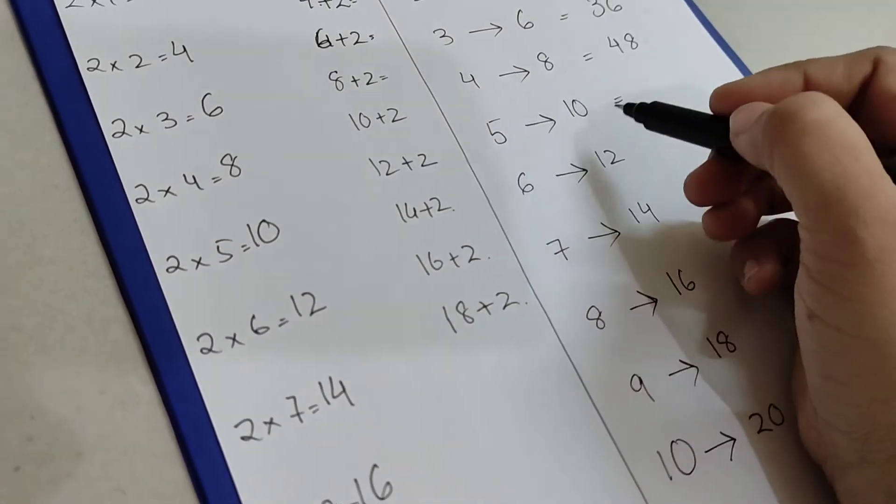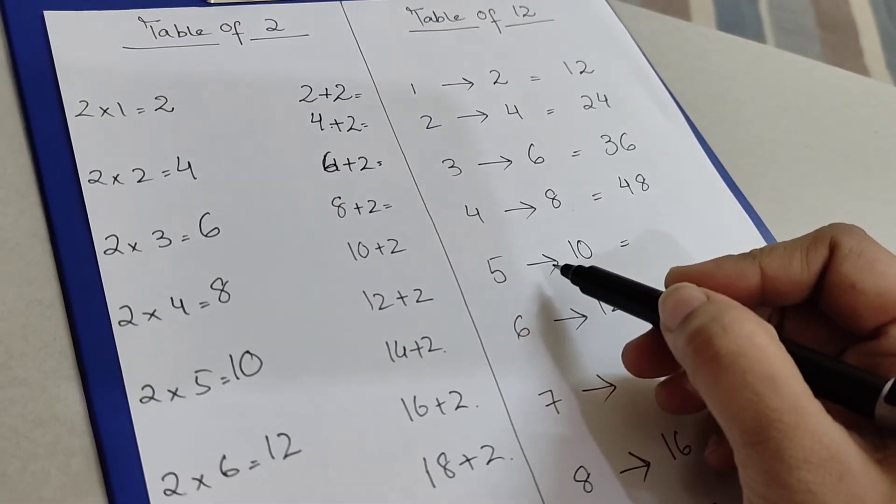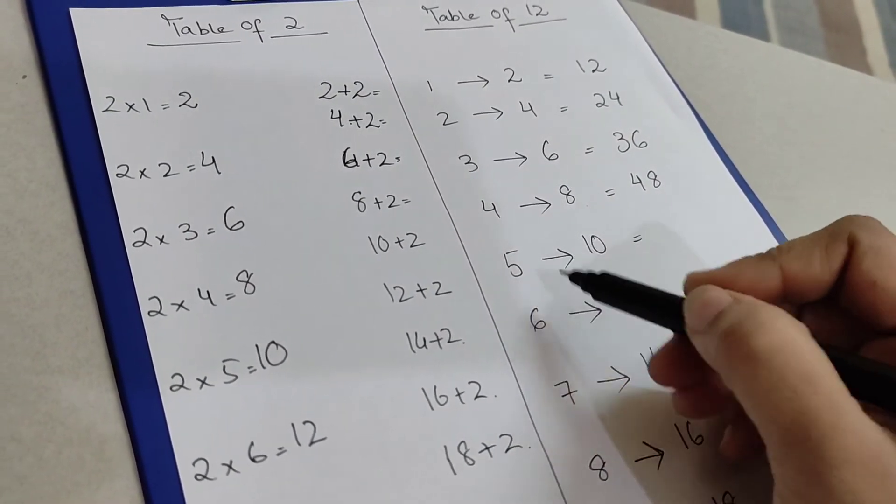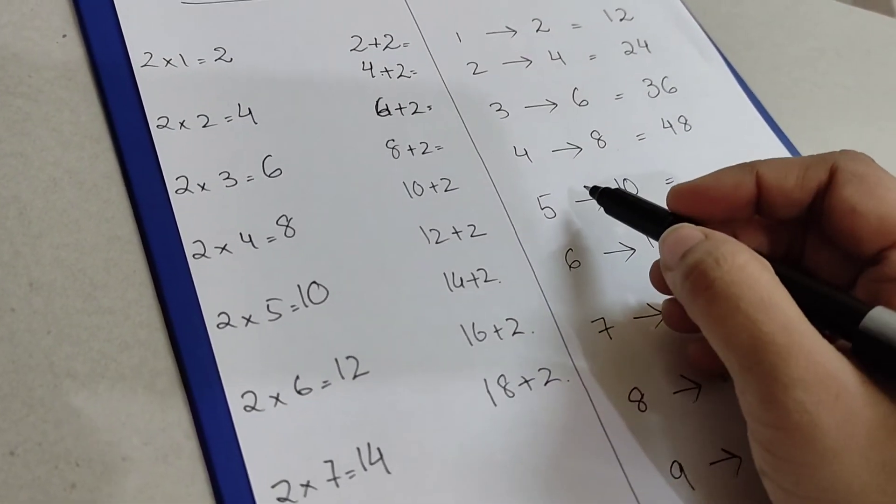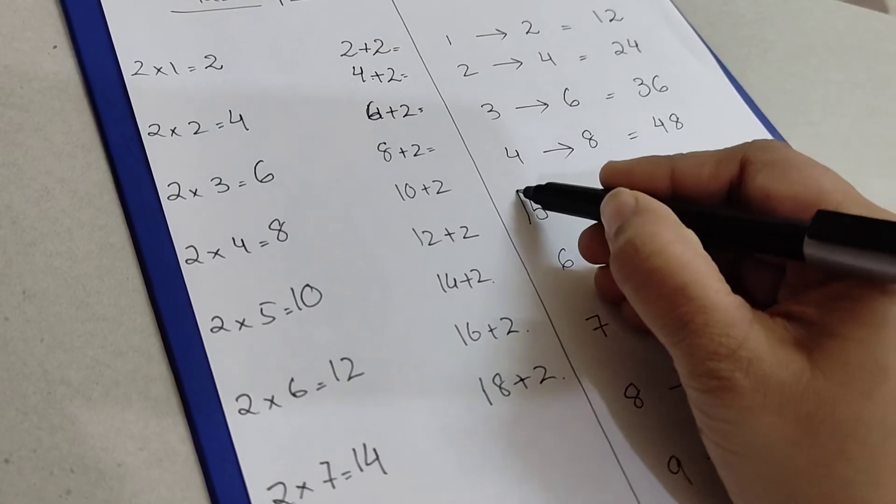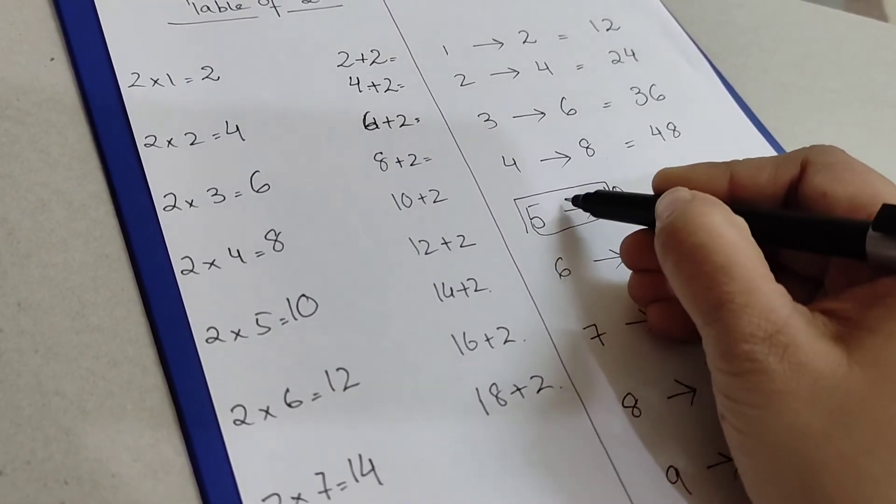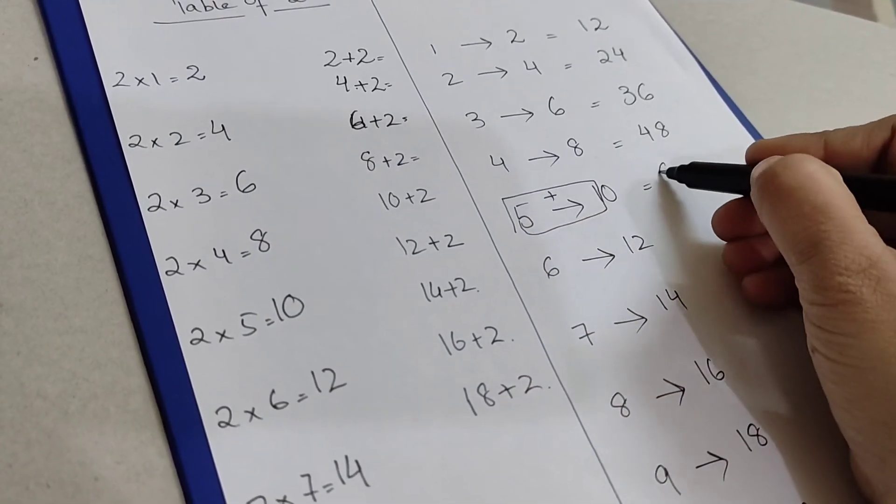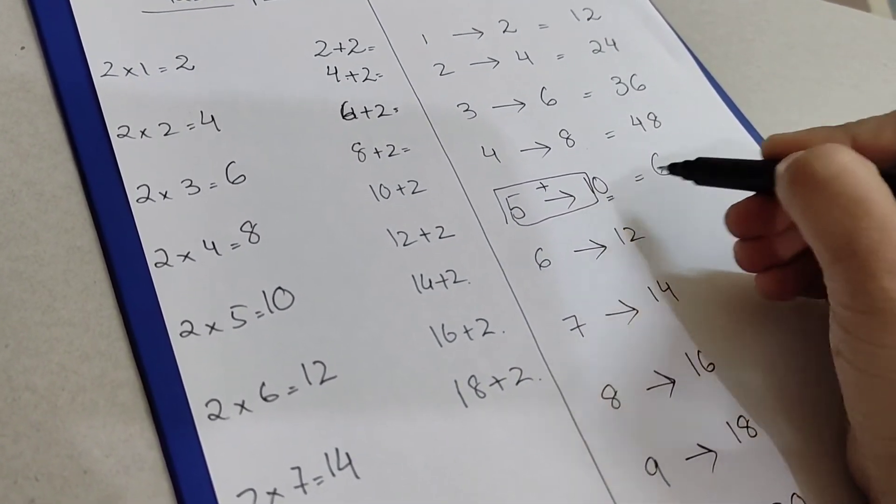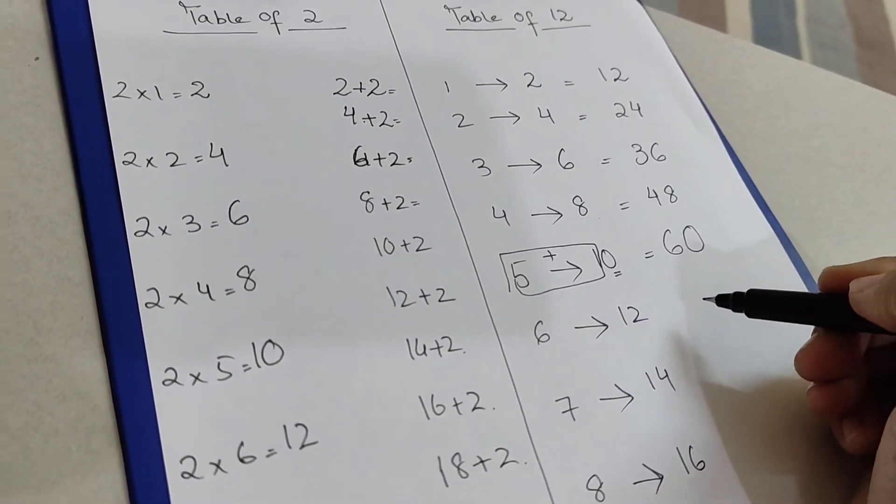Now how will you add for getting the table? Twelve times five. Can we add two digits like this? No. So what are we going to do? We are going to add these two digits: five plus one is six. What's left over here? Zero. So twelve times five is sixty.